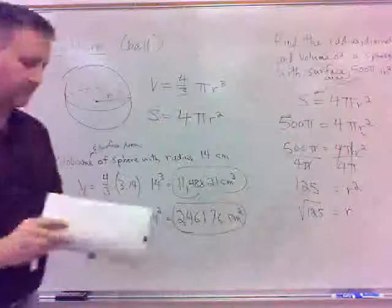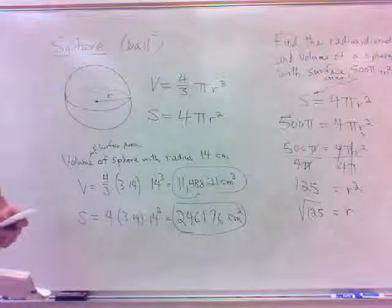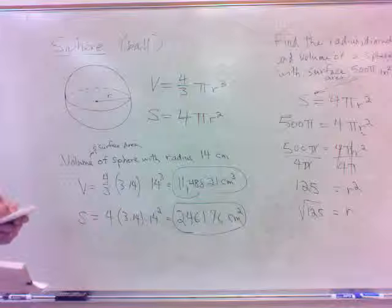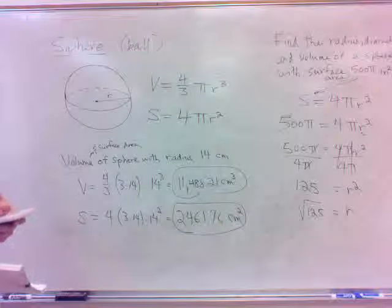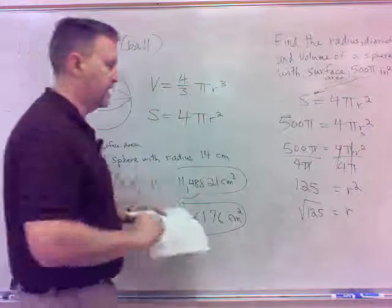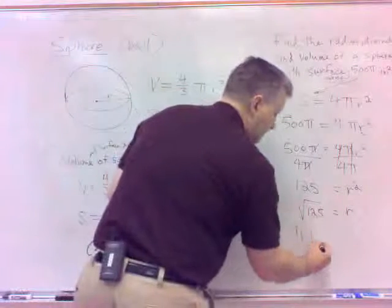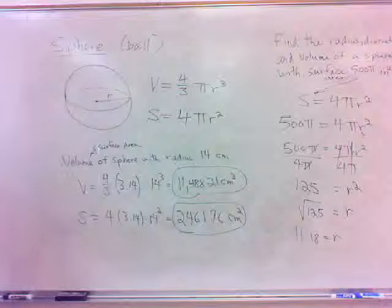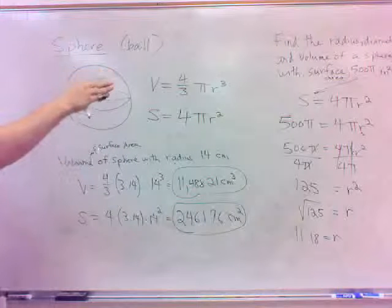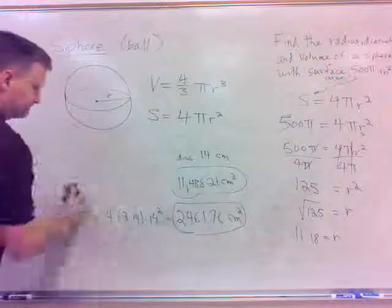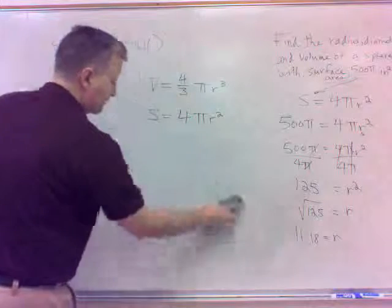Well, square root of 125, which is, punch it up here, belongs about 11.18. That's my radius. So, we can find the radius. If we've got the surface area, yeah, we can find, find there the radius. Going through a similar process.